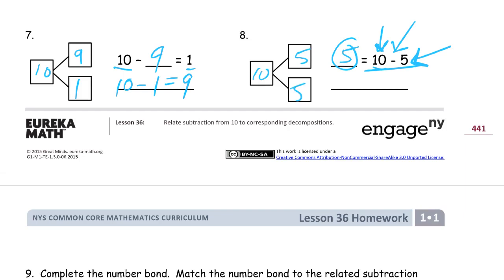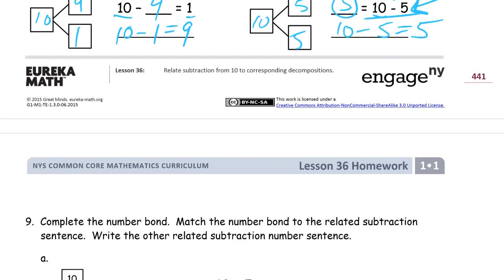And we could rewrite this as 10 minus 5 equals 5, just so it looks a little bit different. Working from left to right, like most of the world.